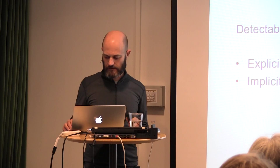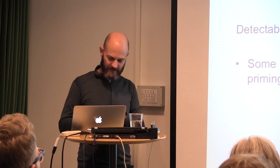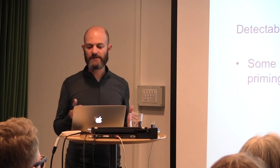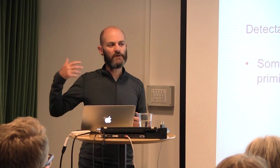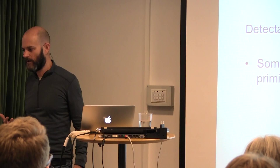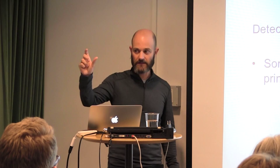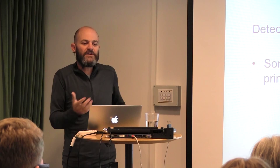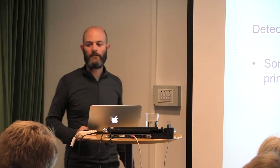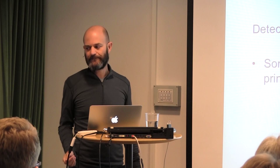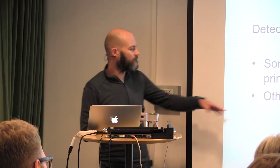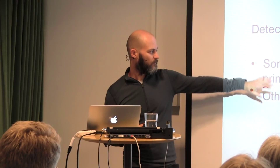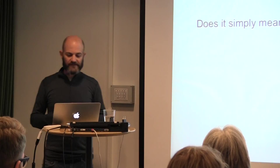There are two types of implicit measures. Some are content-respecting: we pick up on them because they involve intelligible transitions between contentful states — for example, word stem completion, where being primed with 'lettuce' makes subjects more likely to complete the stem 'let-' with 'lettuce.' That's an intelligible transition. Other implicit measures are purely correlational — physiological or neural — and our justification for thinking they measure the relevant state is a posteriori, which is not so for content-respecting implicit measures.